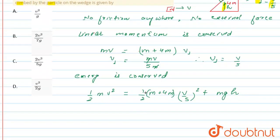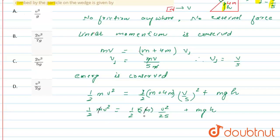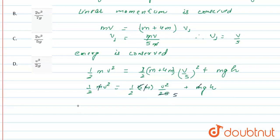Now calculating: one half m v squared equals one half times m times v_f squared — where v_f equals v over 5 from momentum conservation — plus m g h. So we get v squared over 2 equals v squared over 10 plus g h.